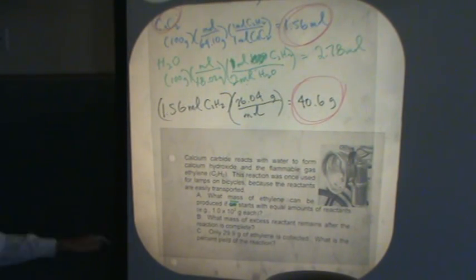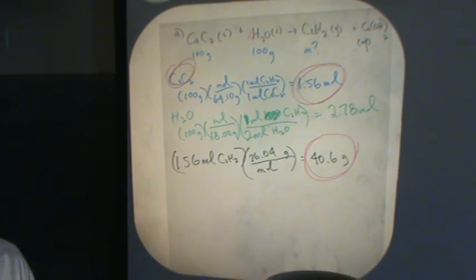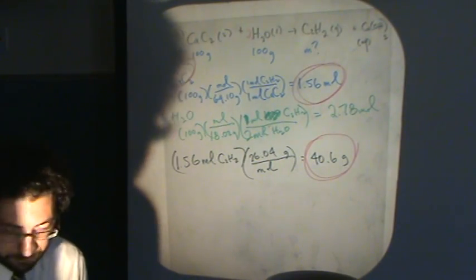What does part B ask for? What mass of excess reactant remains after the reaction is complete? This is the tougher sort of question that you can get. How much leftover water do I have? Remember, it's in excess, so I'm going to have some leftover amount. It's not going to use all 100 grams. It's going to use less than 100 grams. So let's try part B.